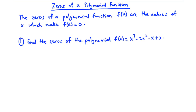In this video, we are going to talk about the zeros of a polynomial function. The zeros of a polynomial function f(x) are the values of x which make f(x) equal to 0. We can also say that the zeros are the roots of the equation f(x) = 0. To solve this equation, we first need to factorize the polynomial.